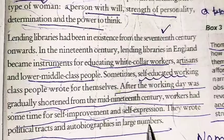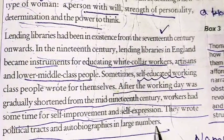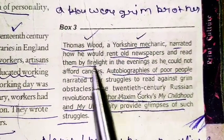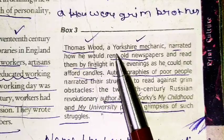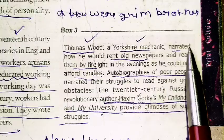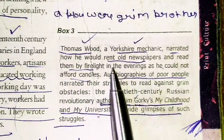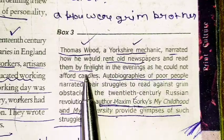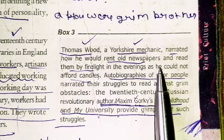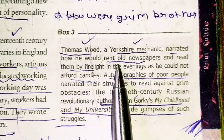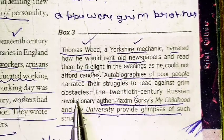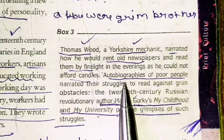Workers wrote political tracts and autobiographies. Thomas Wood, a Yorkshire mechanic, narrated how he would rent old newspapers and read them by firelight at night, as he could not afford candles. The autobiography of poor people showed the struggle to read against many obstacles. These workers' struggles are among the most famous autobiographies.